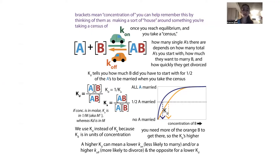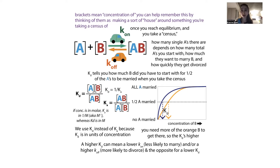The Kd: if you take two molecules, we'll call them A and B, and you mix them together and let them bind, once they've reached equilibrium — where the rates of binding and unbinding have balanced out — you would get an idea of how much is bound and how much is unbound. This ratio would be constant over time. If we take the concentration of free A times the concentration of free B divided by the concentration of AB, we get the value called the Kd.